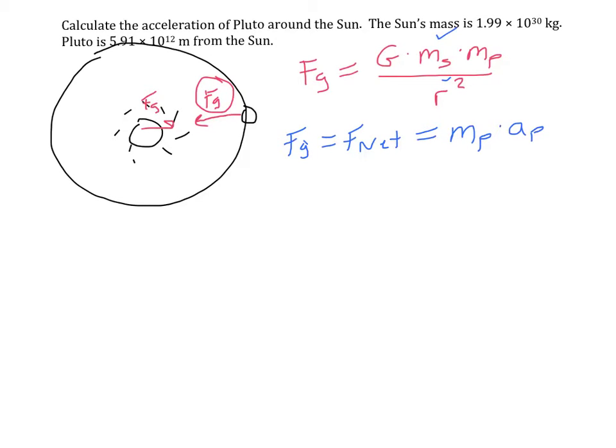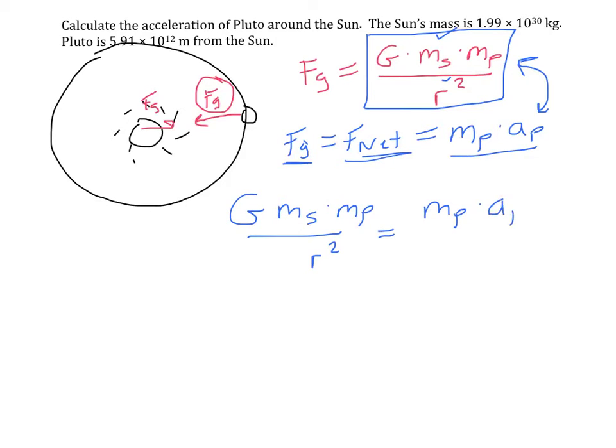So that is the force of gravity, the net force. And hey, we have this equation here. This is the formula for the force of gravity on Pluto. And again, we said this is equal to this, which is equal to this. So what I can do is I can set these two expressions equal to each other. In other words, big G times mass of the Sun times mass of Pluto over r squared equals the mass of Pluto times the acceleration of Pluto.